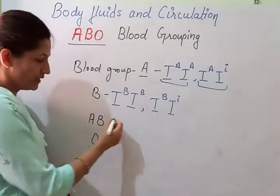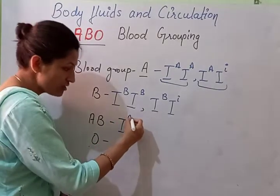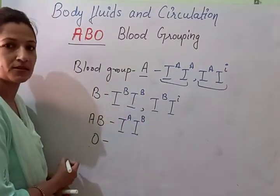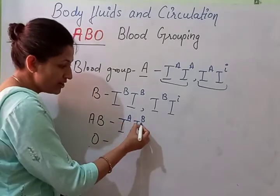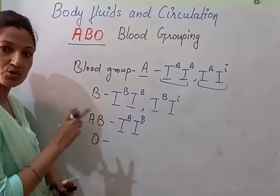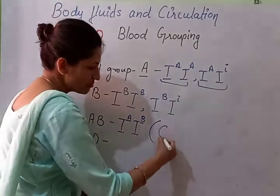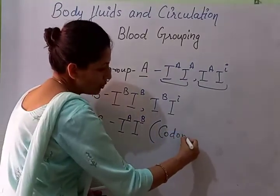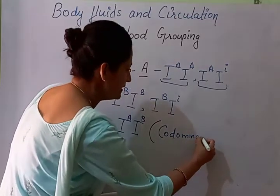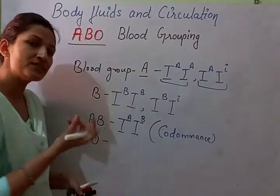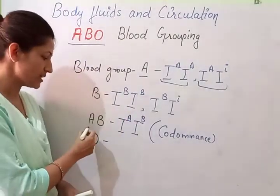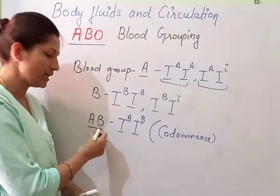For AB, I-A should also be present and I-B should also be present, because both are dominant. And as both are showing dominance together, this is known as co-dominance. This is the example of co-dominance — 'co' means together, so together they are dominant, that's why they give the AB blood group.